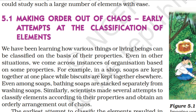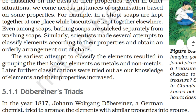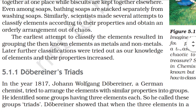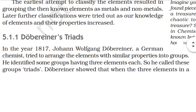Early attempts at the classification of elements: we have been learning how various things or living beings can be classified on the basis of their properties. For example, in a shop, soaps are kept together at one place while biscuits are kept elsewhere; even amongst soaps, bathing soaps are stacked separately from washing soaps. Similarly, scientists made several attempts to classify elements according to their properties. The earliest attempt resulted in grouping the then known elements as metals and non-metals, and further classifications were tried as knowledge of elements and their properties increased.